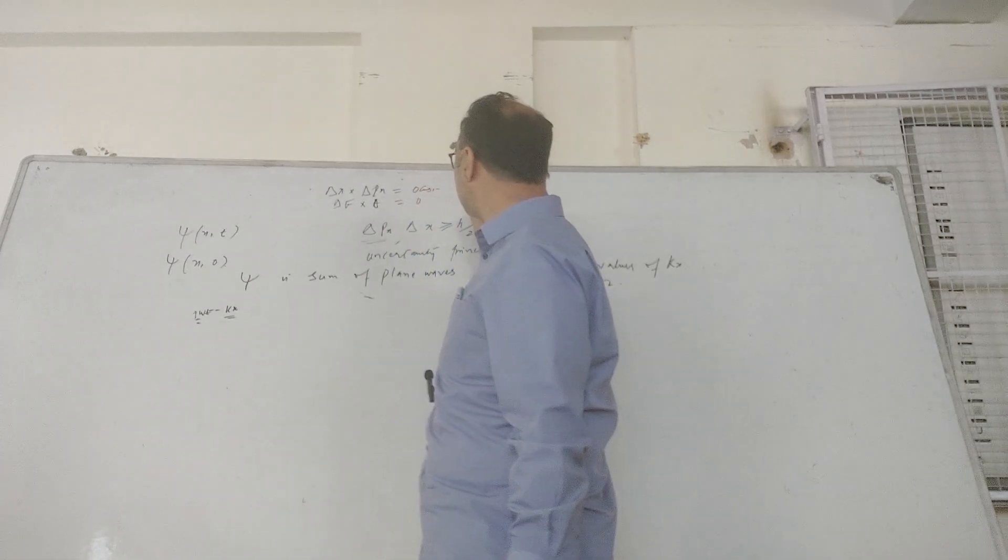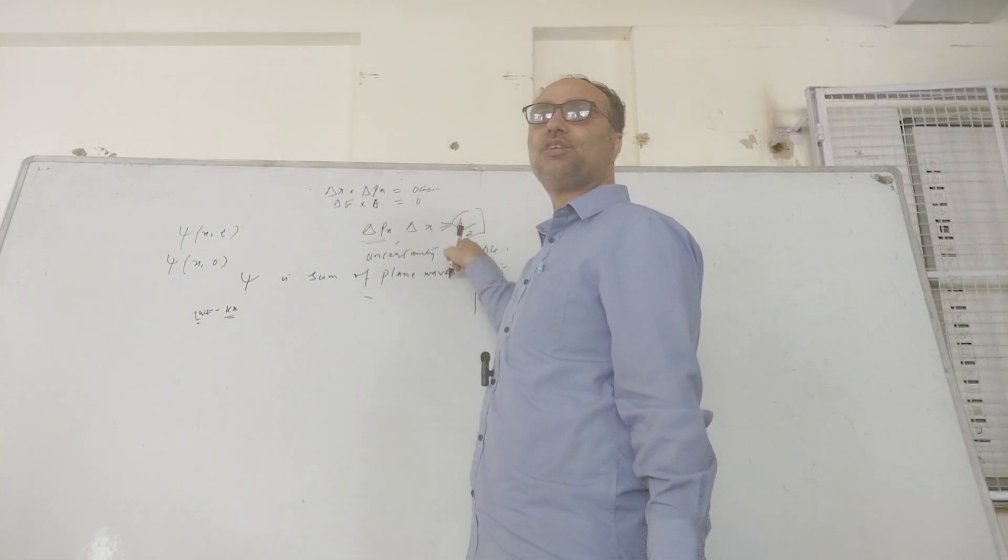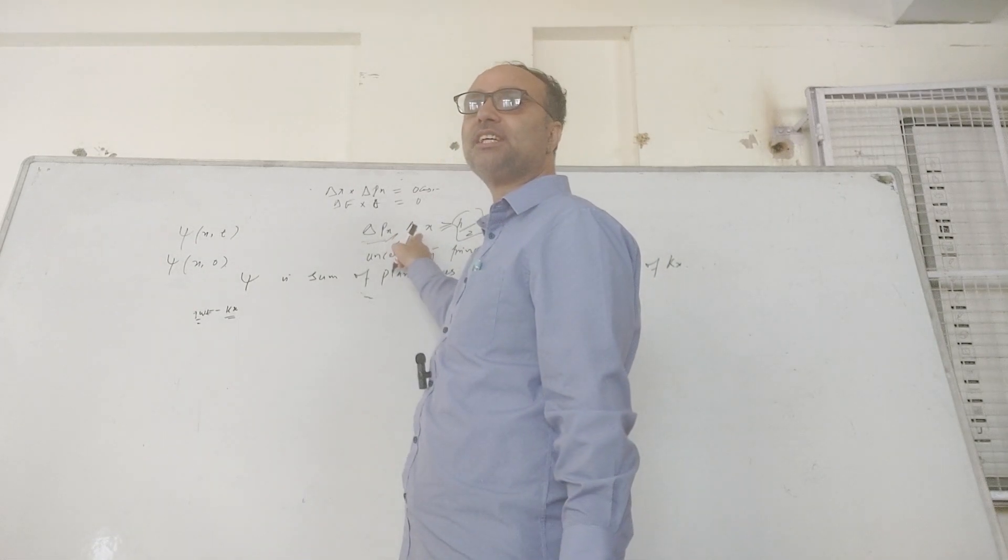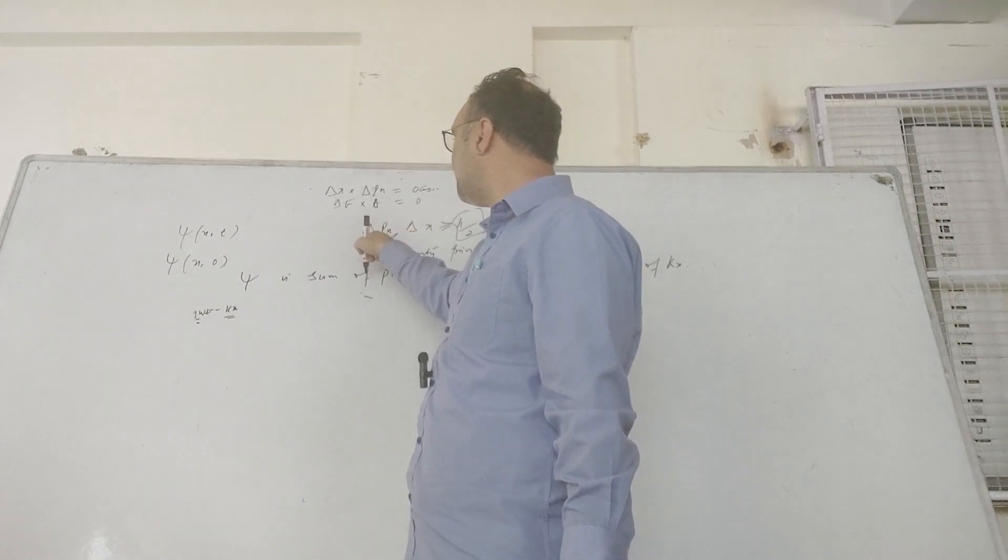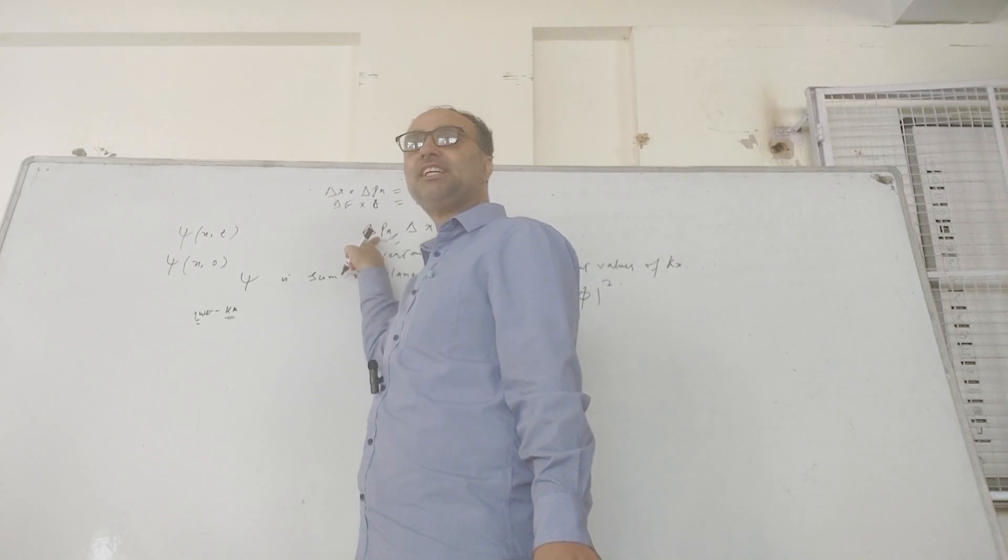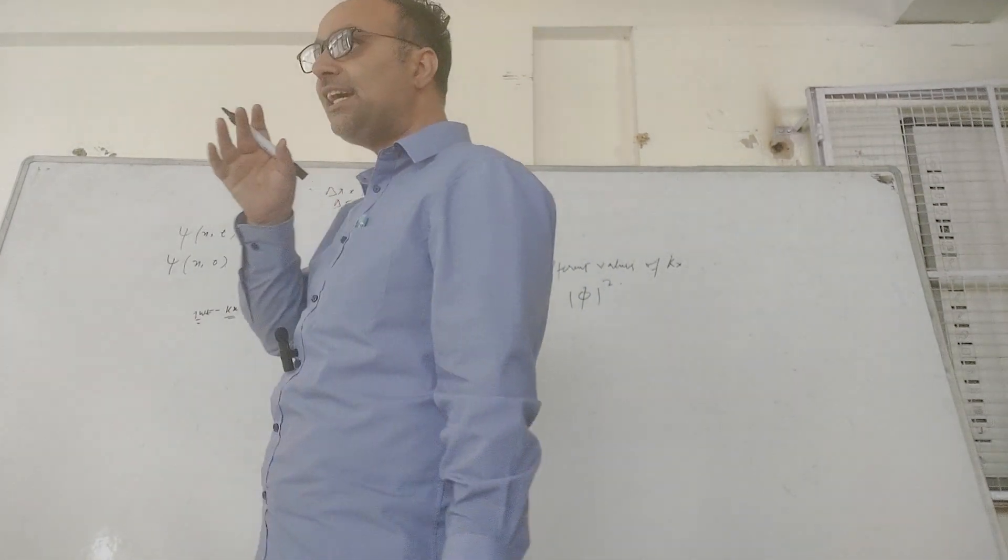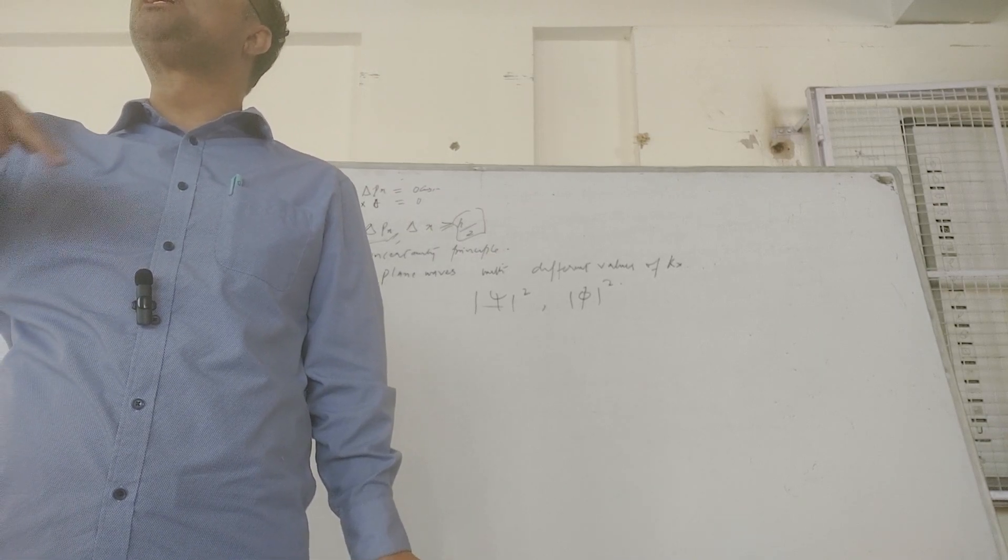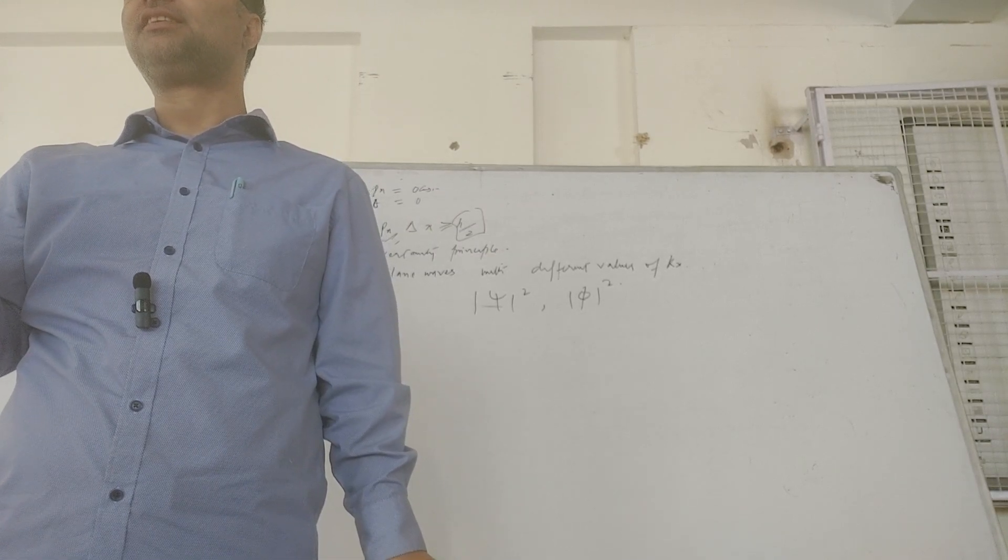But in quantum mechanics, we say it's greater than or equivalent. This means that if we measure one, the other becomes imprecise. If we measure position, this becomes imprecise in our measurement. Now the problem is, how imprecise? Even we have to quantify our uncertainty.